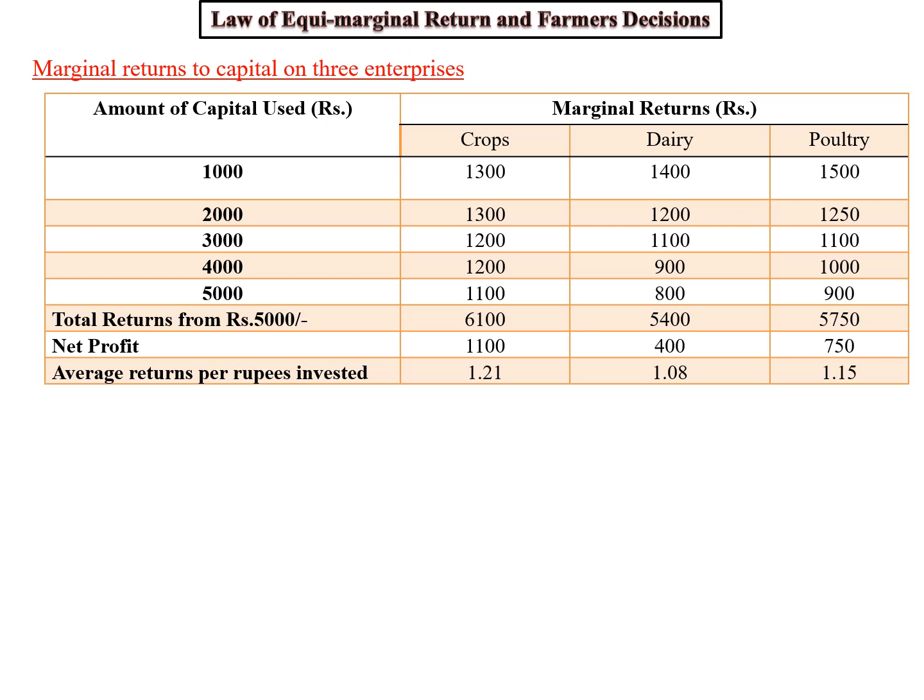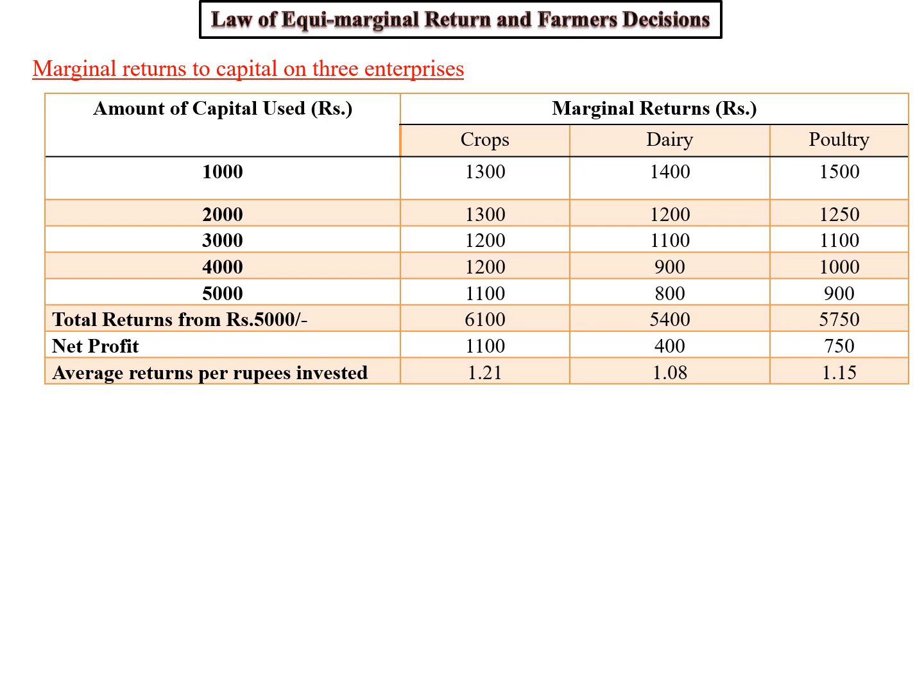As a rational farmer, one might go for crop rather than dairy and poultry based on average return. But the law of equi-marginal return highlights that the farmer should choose those enterprises where marginal return is higher, rather than relying on average return. The choice should be made on the basis of marginal return, not average return.